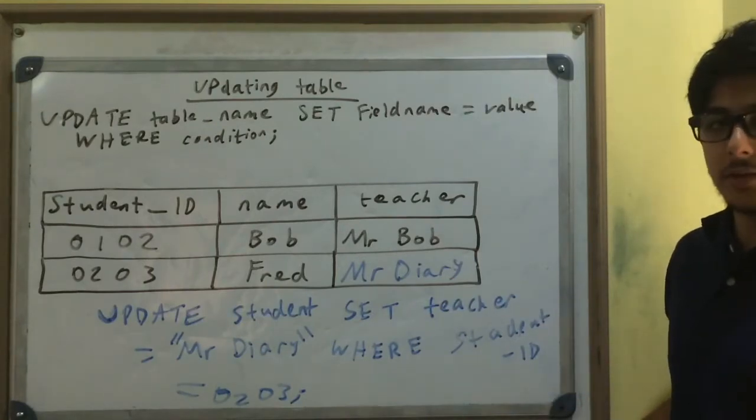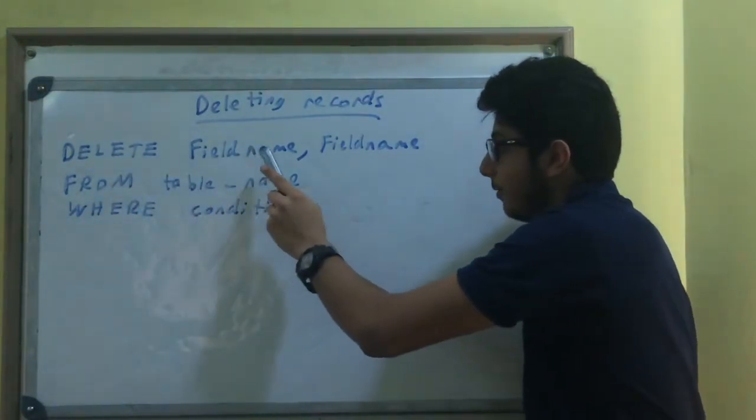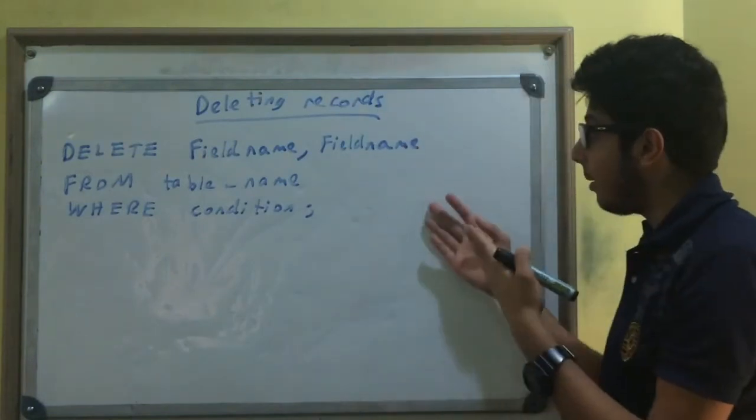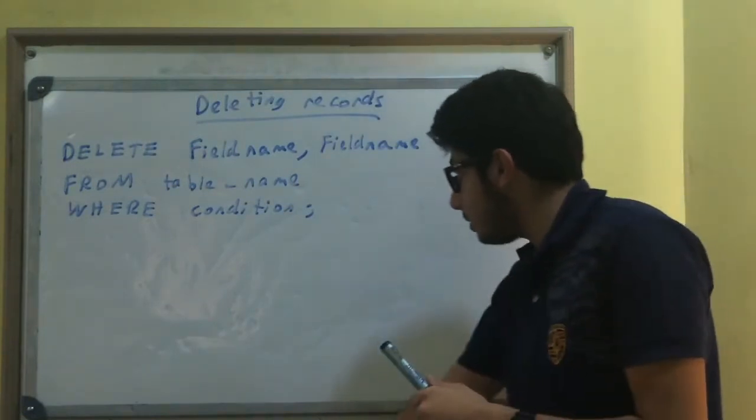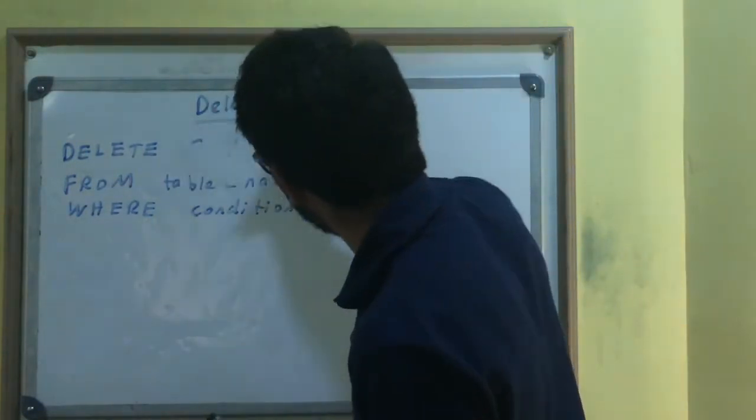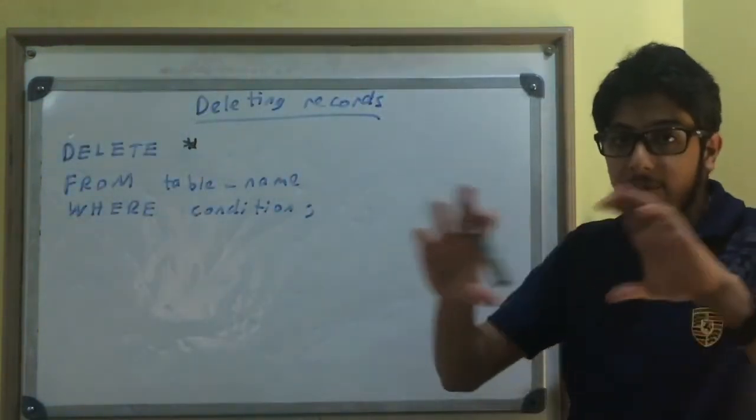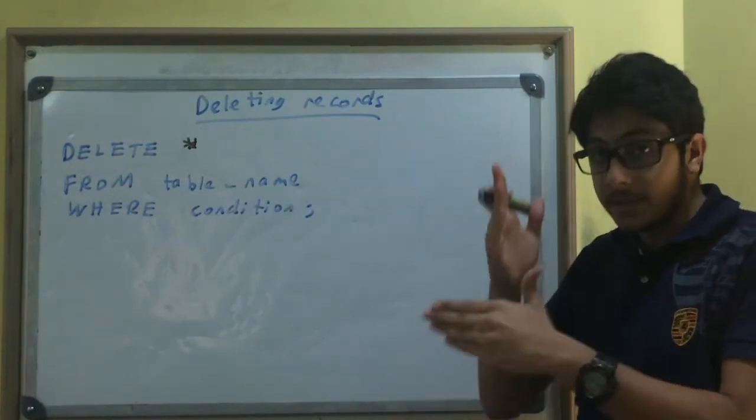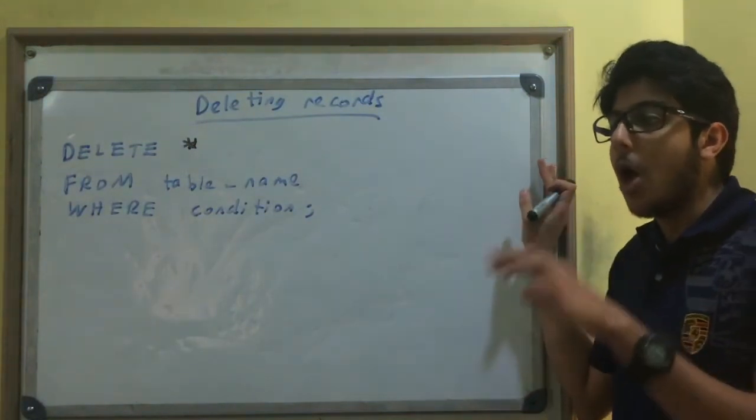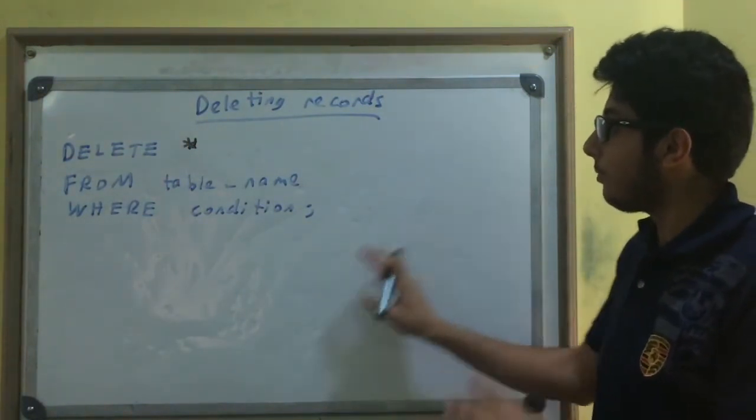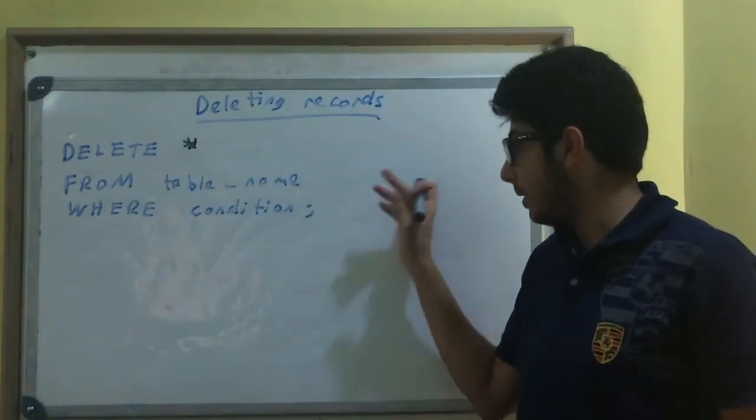To delete records use this statement: DELETE in capital letters, the field name, or if you want, you can use asterisk in which case to delete everything from that record. Or if you want certain things deleted from that record, you want the field name from the name of your table, WHERE, then you put a condition, and then end the statement with a semicolon.